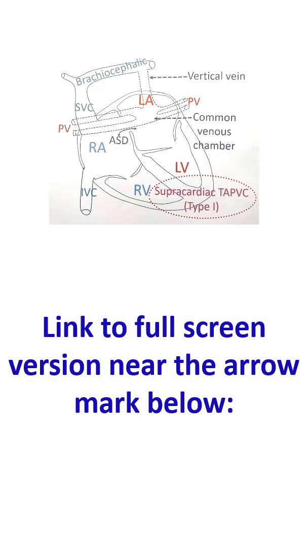There are three major types of TAPVC and one more type known as mixed type. Major types are supracardiac, intracardiac, and infracardiac. The fourth is a mixture of all three in combinations.